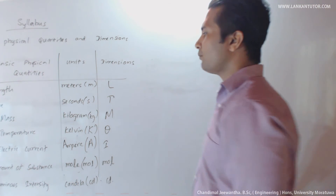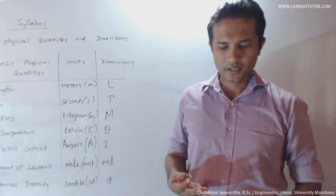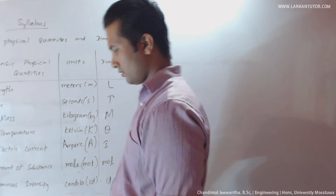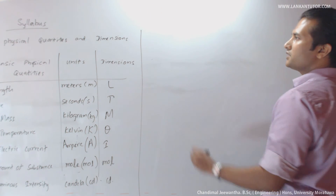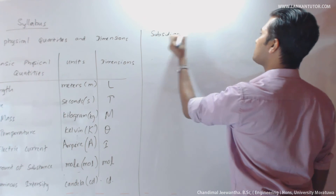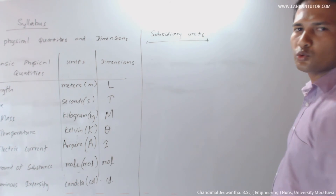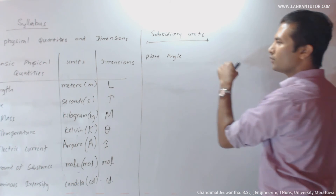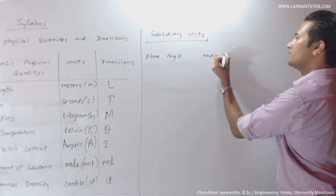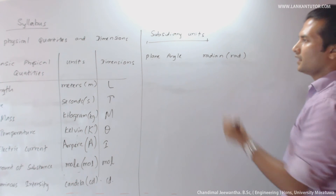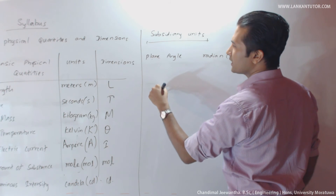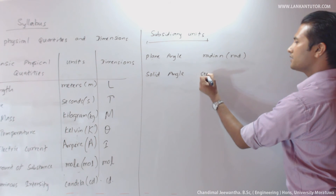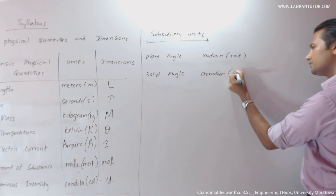The dimension of luminous intensity is the same as the unit. These are the main basic physical quantities. Now we move on to the subsidiary units. There are two subsidiary units: the first is plane angle, with unit radians and symbol 'rad'. The second is solid angle, with unit steradian and symbol 'sr'.